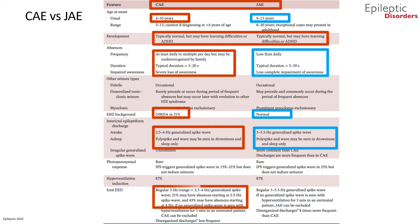Hyperventilation induction can be seen in both childhood and juvenile absence epilepsy subtypes. The ictal EEG for CAE shows regular 3 Hz generalized spike and wave, compared to JAE where regular 3 to 5.5 Hz generalized spike and wave activity is seen. Disorganized discharges are seen eight times more frequently in juvenile absence epilepsy.